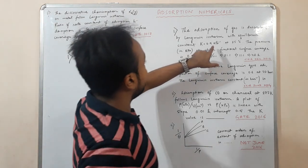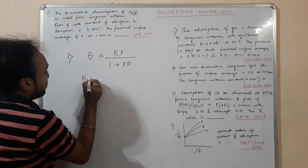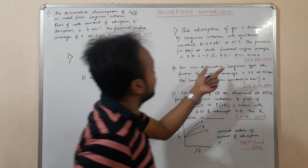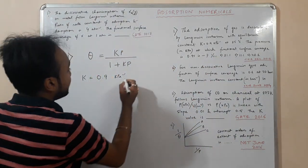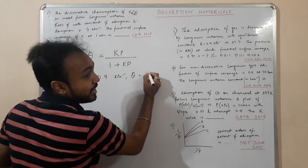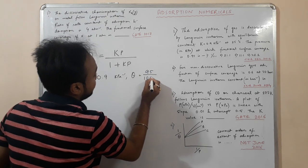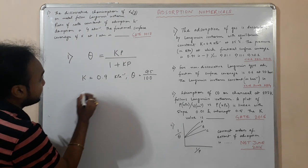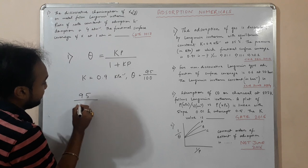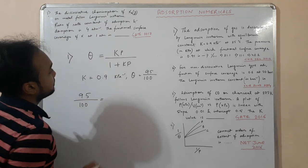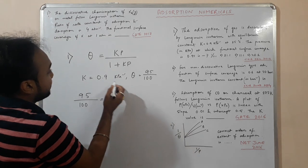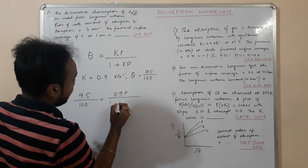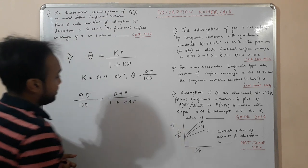We have given K value as 0.9 kilopascal inverse and the fractional surface coverage as 0.95, that is theta equals 0.95 or 95 by 100. Just putting the value, we have to find the p value. That is, theta 95 by 100 equals Kp, 0.9p by 1 plus 0.9p.